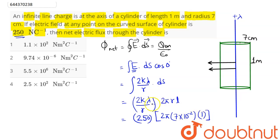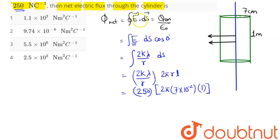On calculation, this value comes out to be, on further simplification, we can find out this value to be 1.1 into 10 power 2 newton meter square per coulomb.